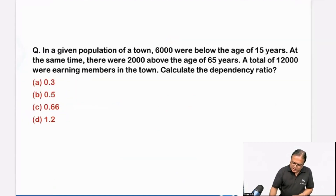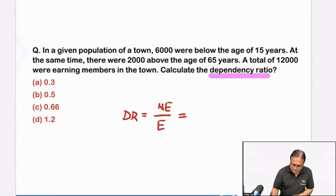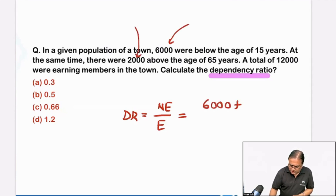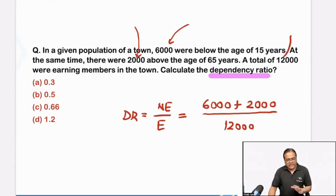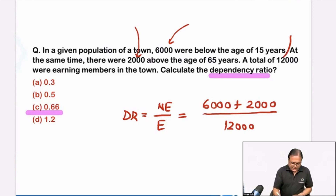This question was on dependency ratio. Again, such an easy question. Dependency ratio is non-earning upon earning population. Non-earning is below 15 and above 65. So a total of 6000 and 2000 divided by the remaining 15 to 64 year population, which was 12,000. This was a direct question — direct formula. Easy: 0.66.